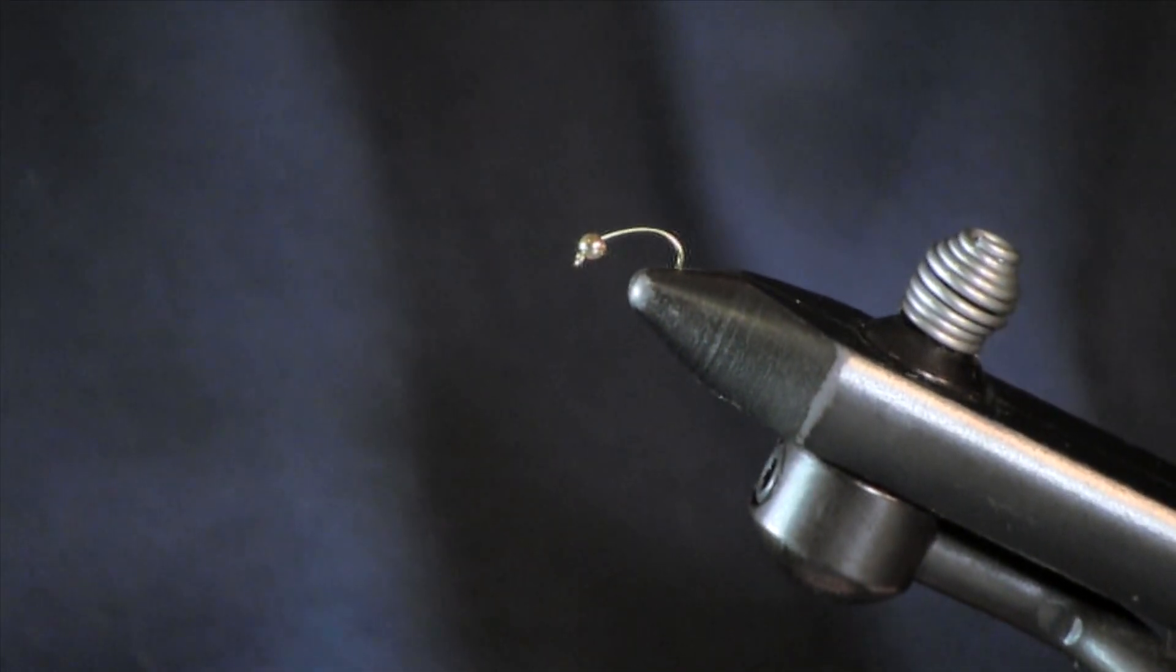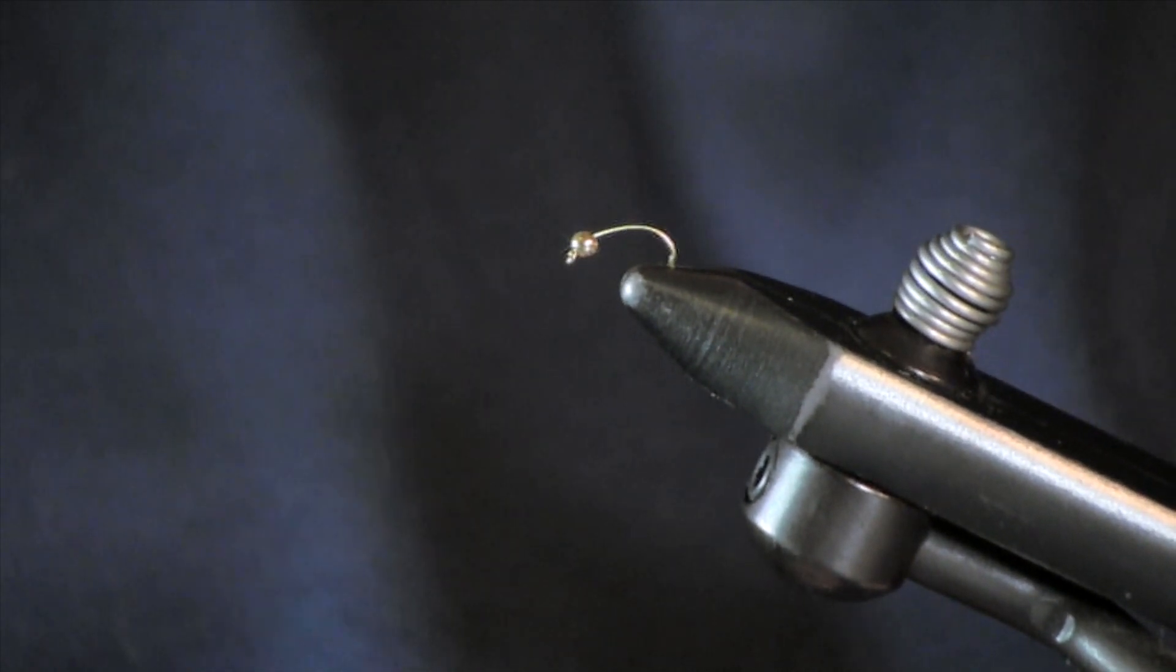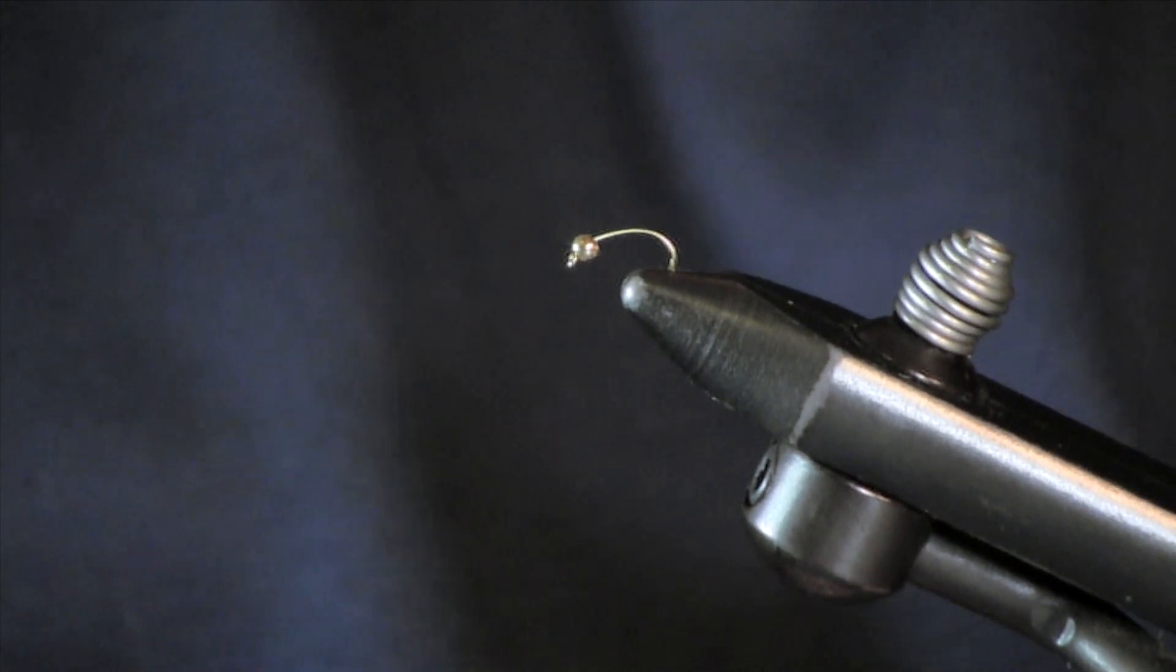Okay on the copper john, what we are going to tie this on is I like to tie mine on a scud hook. It gives a little bend, a little bit more life-like. This is a size 16 I am tying on here, you can tie it down as small as you can tie it or you can tie it up to even a size 12 if you'd like.